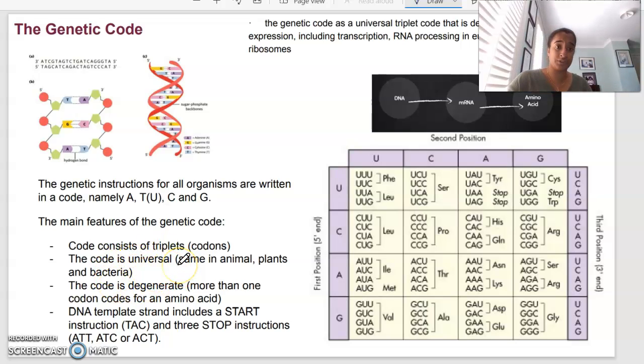We say that this code is universal. That means no matter if it's an animal, a plant, a fungi, whatever it is, UUU is going to be PHE. UCU is always going to be SER, serine. So it's universal, no matter what the animal is.